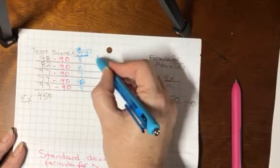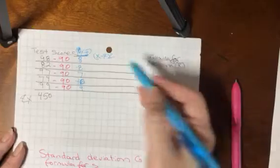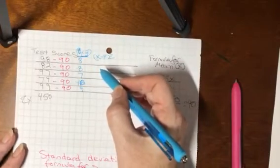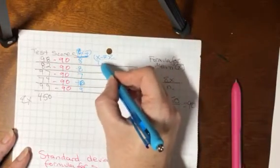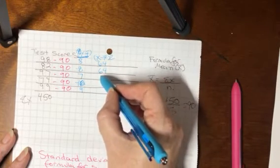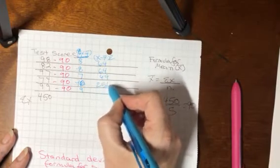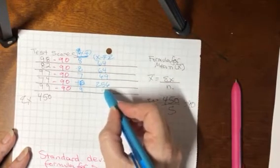Now we're going to do our x values minus the mean squared so we're just going to square each of those. So 8 squared is 64 and again 8 squared is 64, 7 squared is 49, 16 squared is 256 and 9 squared is 81.